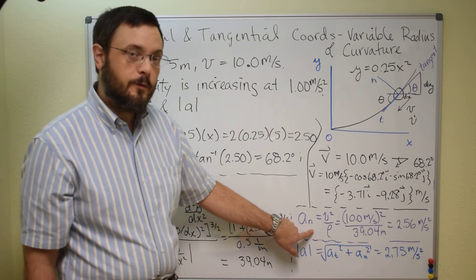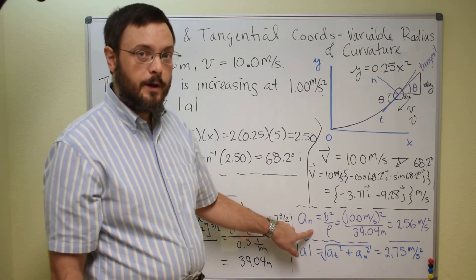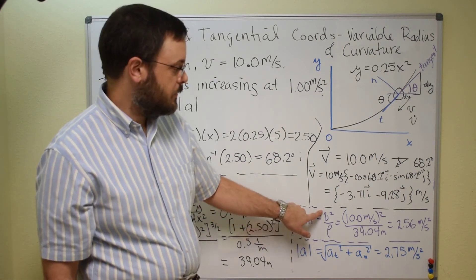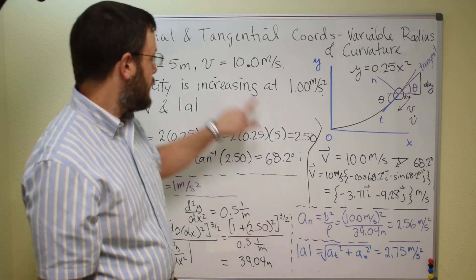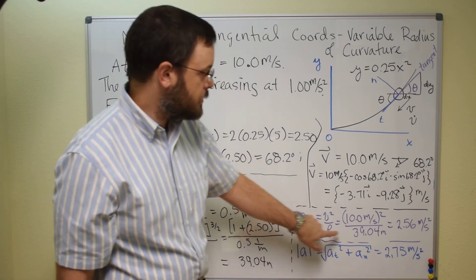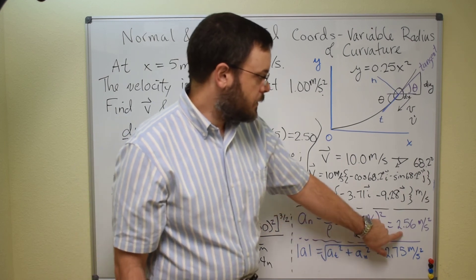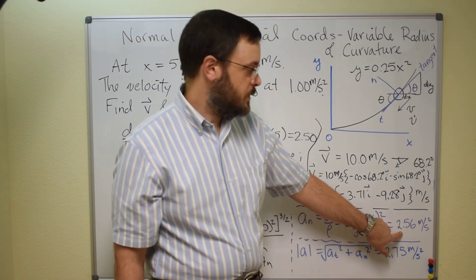Now you can plug in and solve for the normal component of the acceleration, it'll be v squared divided by radius of curvature. V was given in the problem statement, radius of curvature we just calculated, and we get 2.56 meters per second squared.